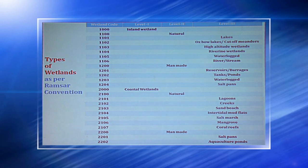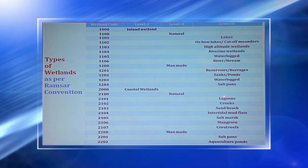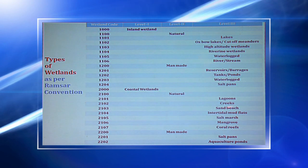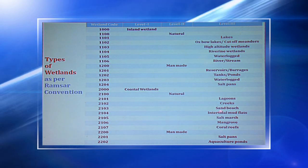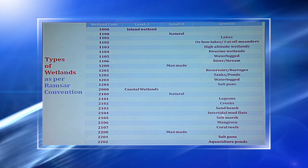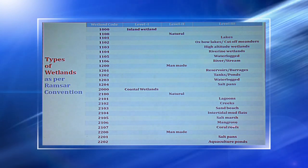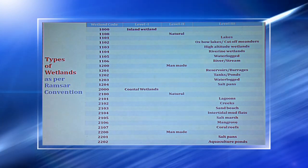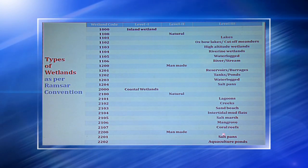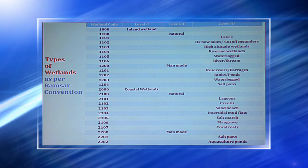Natural coastal wetlands cover lagoons, creeks, sand beaches, intertidal mud flats, salt marshes, mangroves, and coral reefs. Man-made coastal wetlands include salt pans and aquaculture ponds.